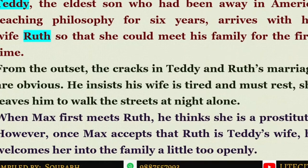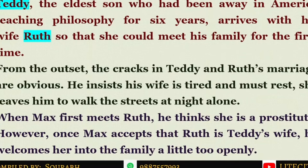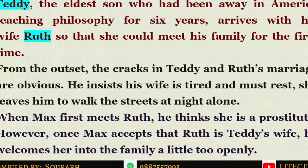From the very outset, we can see that Teddy and Ruth's marriage is not going very harmoniously. She is trying to show her own identity and is not one who can easily be domesticated or tamed. For example, during the first scene, Teddy insists she should stay inside and rest. But Ruth says no — she wants to take a walk and goes out alone at night. During her walk, Max sees her and thinks she is a prostitute.